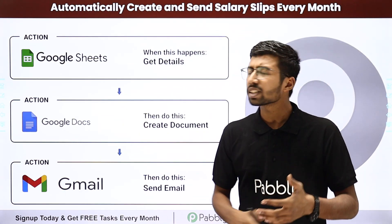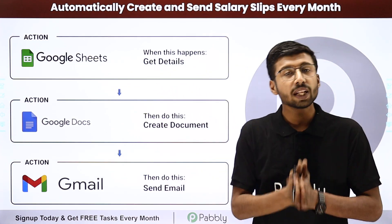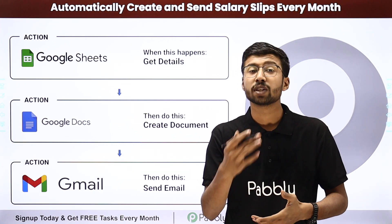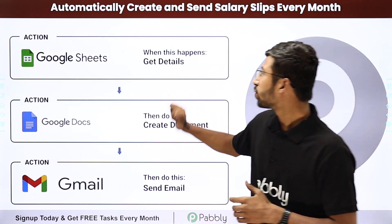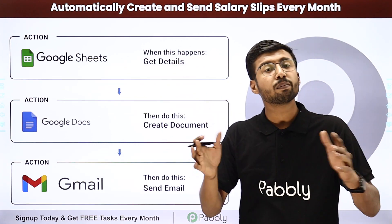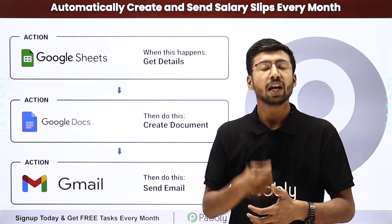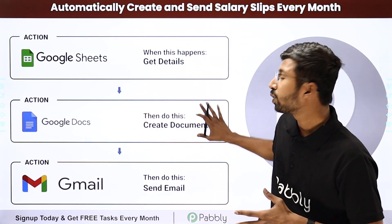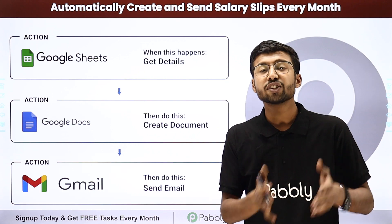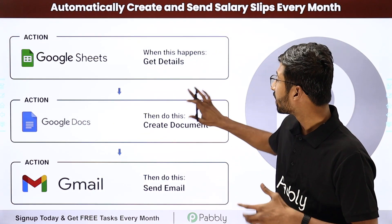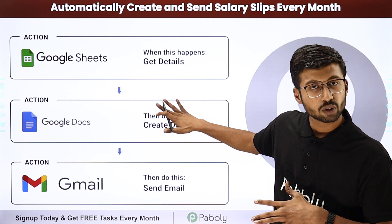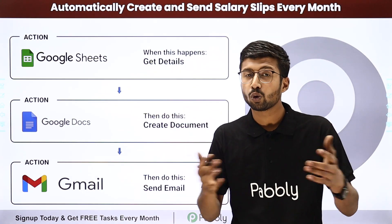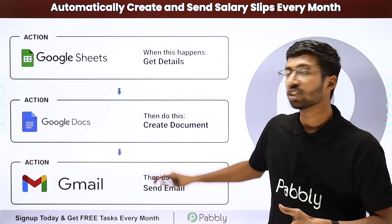Moving ahead to our fifth and last automation idea: automatically creating and sending salary slips every month. Using this automation, you can create salary slips for all employees at once and send them via email. You just have to enter the complete data related to salary slips into a Google Sheet. Using that data, salary slips are generated for each and every employee in Google Docs. After making all the calculations in the automation workflow and generating the salary slip, the same salary slip is sent to all employees using Gmail.